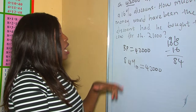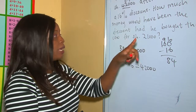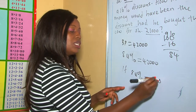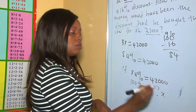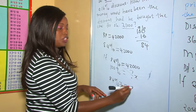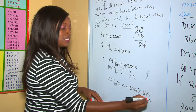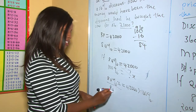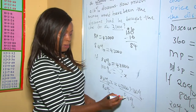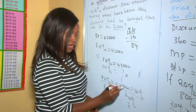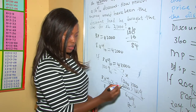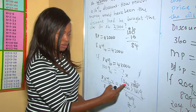To find the marked price: if 84% = 42,000, what about 100%? Cross multiplying: 84% × x = 42,000 × 100%. Dividing both sides by 84%: x = (42,000 × 100) ÷ 84 = 42,000 ÷ 84 × 100 = 500 × 100 = 50,000. Therefore our marked price is 50,000 shillings.